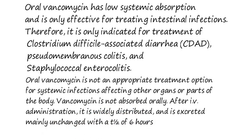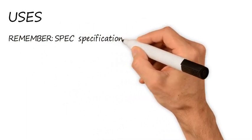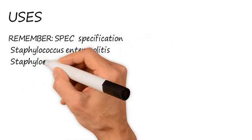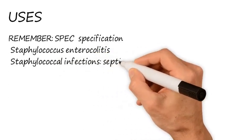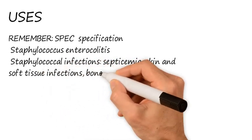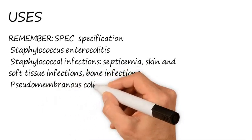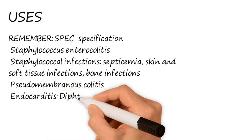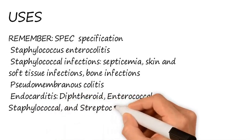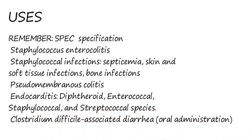Then we have uses. I have mentioned here SPEC - that means specification. These are the uses: S for staphylococcus enterocolitis, staphylococcus infections including septicemia, skin and soft tissue infections, bone infections. P for pseudomembranous colitis. E for endocarditis - diphtheroid, enterococcal, staphylococcal, and streptococcal species. C for Clostridium difficile-associated diarrhea for oral administration.